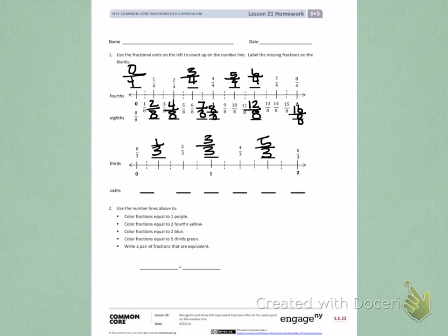Underneath, I have sixths, starting at 0, that would be 0 sixths, but there's no line there for me to label. So, I'm going to start labeling at 1 sixth. Then, I have 2 sixths, 3 sixths, 4 sixths, 5 sixths, 6 sixths. I'm not labeling every single one, only where there's spaces for me.